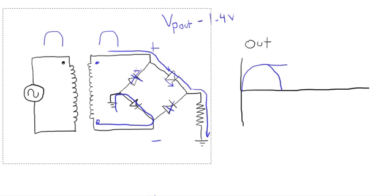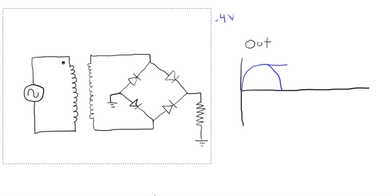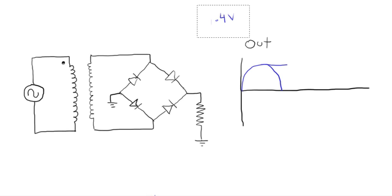So that output voltage is actually better than in the full wave. In the full wave, if you remember, we actually had to half it and then remove .7. Here we just remove 1.4. So certainly we're getting a little bit better output voltage on this circuit than we did on the full wave rectifier.